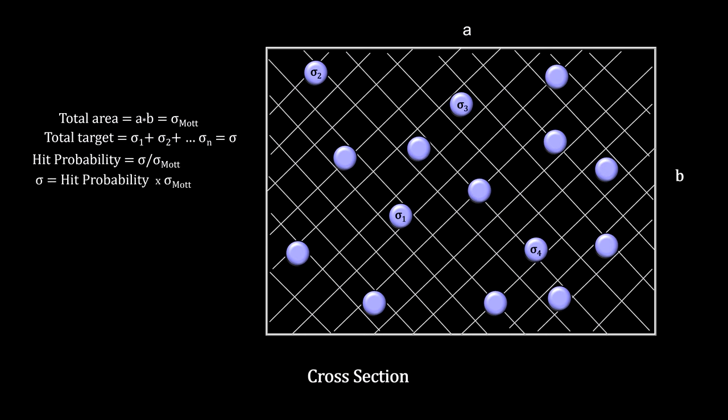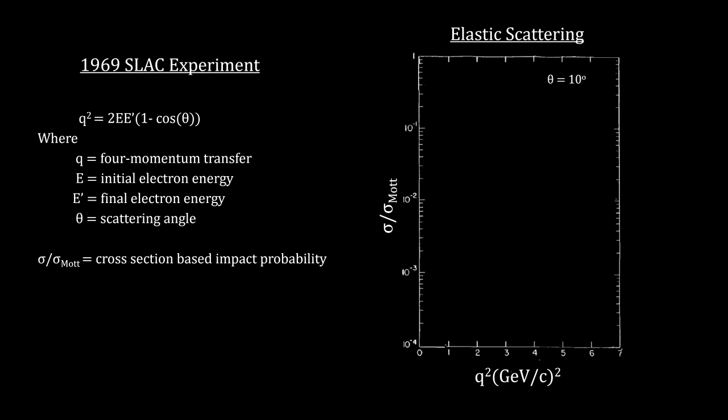SLAC calculated the cross-section by controlling the number of incident electrons and counting the hits. Here is a graph of the interaction probabilities against the momentum transfer found by the SLAC experiment for electrons with energies below 7 gigaelectron volts that are scattered by 10 degrees. The closer to the target we get, the smaller the cross-section, decreasing the probability of a hit, while at the same time, the momentum transfer increases with each hit that we do get. The velocity of the electrons remained the same, indicating that no energy was being transferred to the proton. This is exactly what we would expect from elastic scattering.